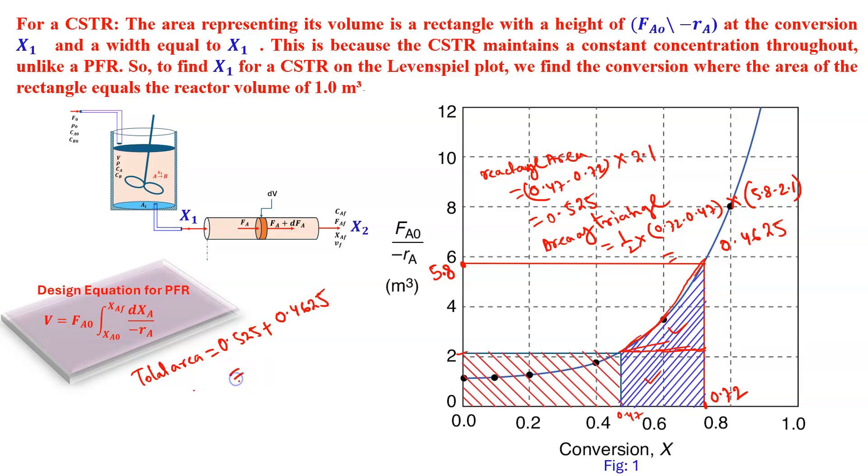Total area will be 0.525 plus 0.4625, that will be 0.9875, that is nearly equal to 1 meter cube. This means our guess value, that X2 is 0.72, is correct. For this configuration, CSTR and PFR in series, for same volume, the outlet conversion is 0.72. That's it. Thank you.